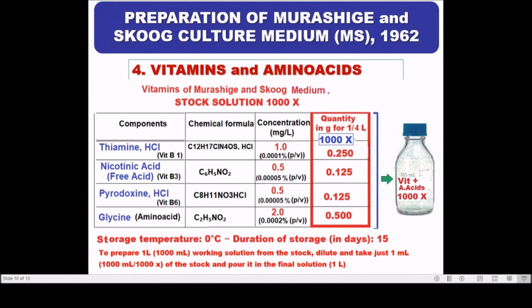To prepare one liter of working solution from the vitamins and amino acids stock, dilute 1000X by taking 1 milliliter (1000 milliliters divided by 1000X) of the stock and pour it into the final solution.